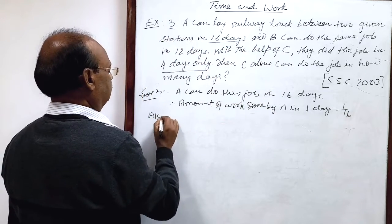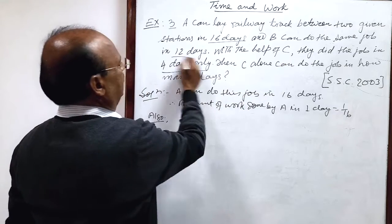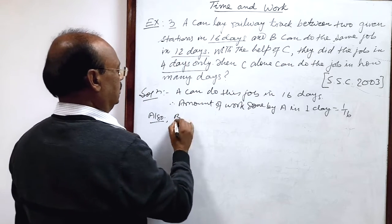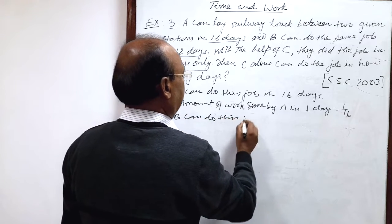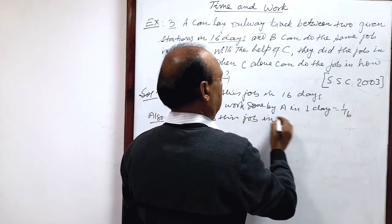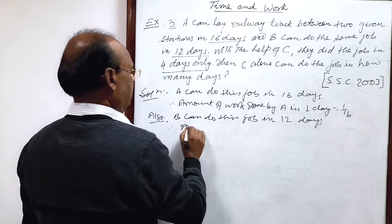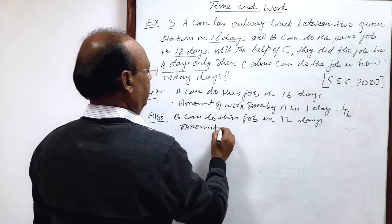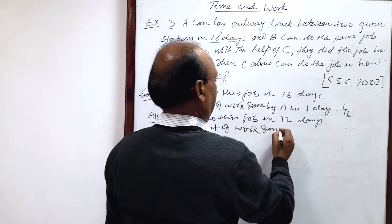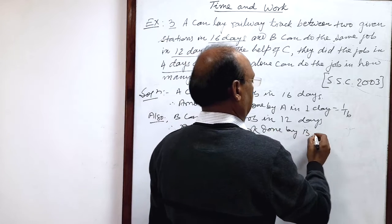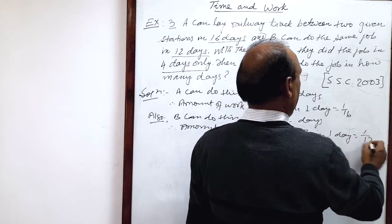Also, B can do the same job in 12 days. Also, B can do this job in 12 days. Therefore, similarly, we can find amount of work done by B in one day will be how much? 1 by 12.